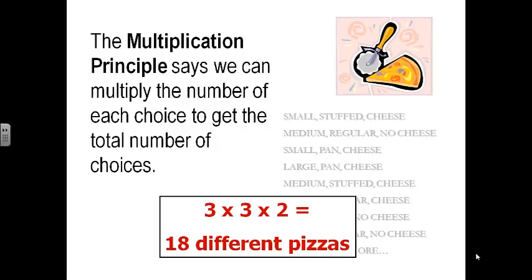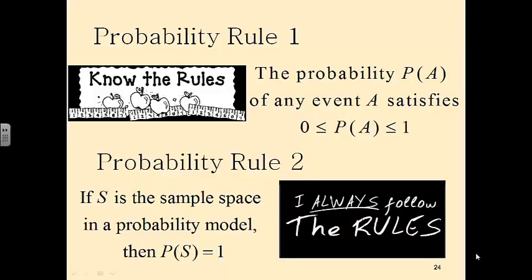We don't have to write the sample space if we can use the multiplication principle. Probability rule number one: the probability P(A) of any event satisfies zero — it is between zero and one. The probability of an event that can never happen is zero. The probability of an event that always happens is one, and everything in between. So probability has to be between zero and one.